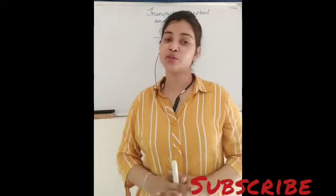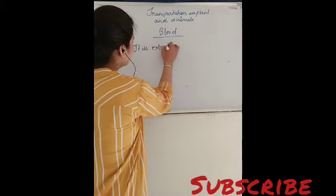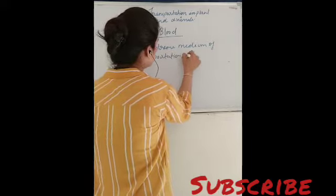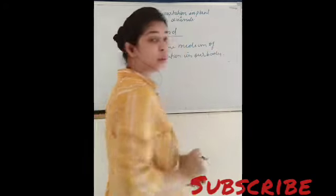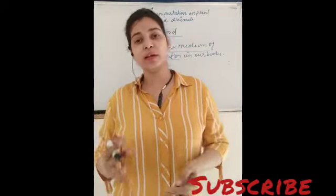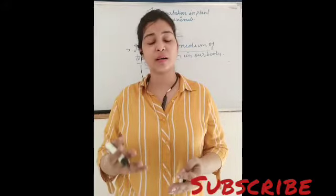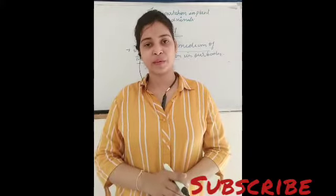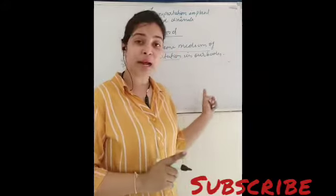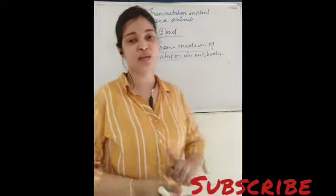What is blood actually? In short, blood is the extreme medium of transportation in our body. Suppose you want to move from one place to another — there is a bus available, and with the help of that bus you can move to each and every part of your city. In the same way, with the help of blood, each and every substance can reach each and every part of our body. That is why we say blood is the extreme medium of transportation in our body.